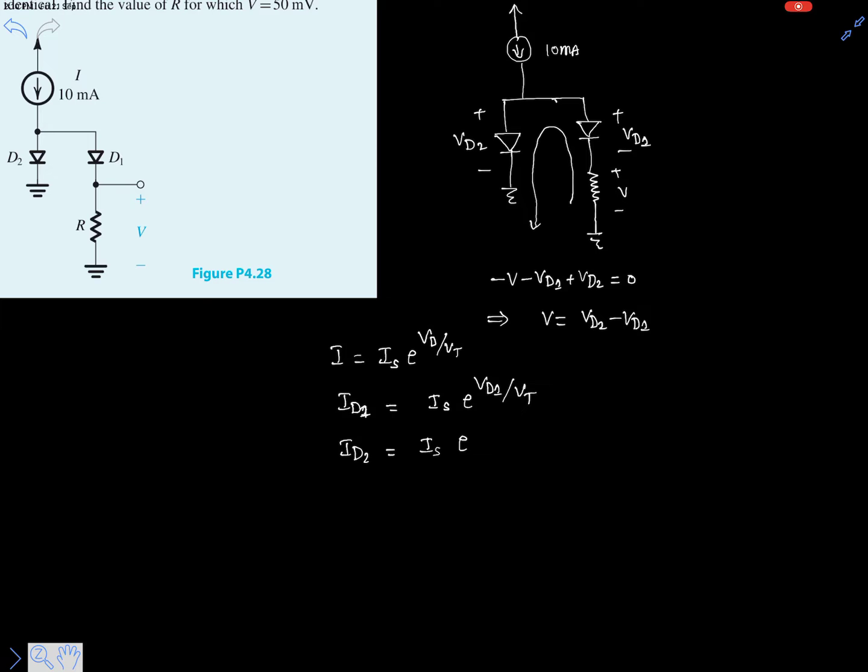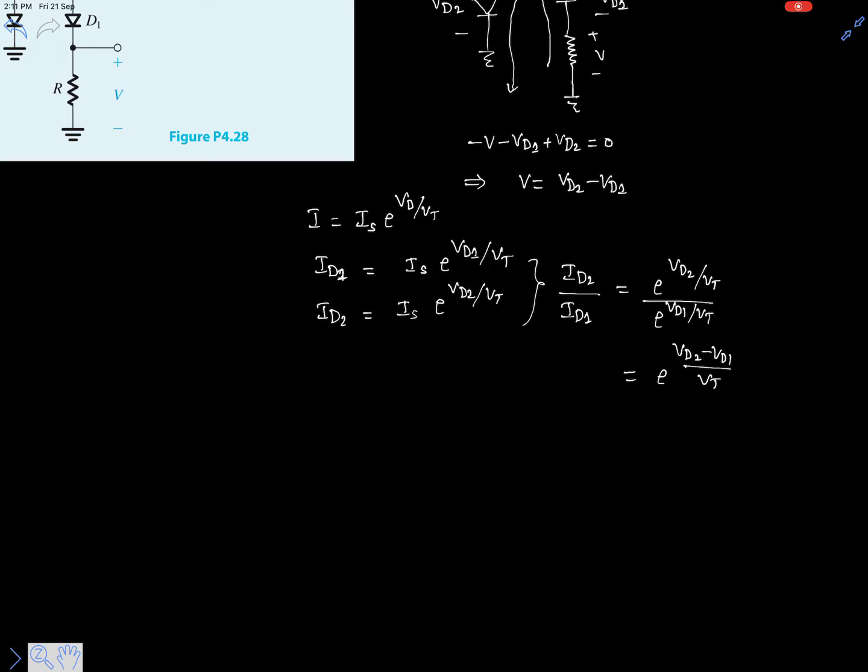Similarly, let's write the second equation for diode D2: e to the power VD2 over VT. Now simply let's divide these two equations. ID2 divided by ID1 which will give us e to the power VD2 over VT divided by e to the power VD1 over VT.